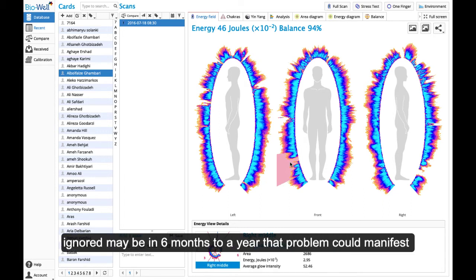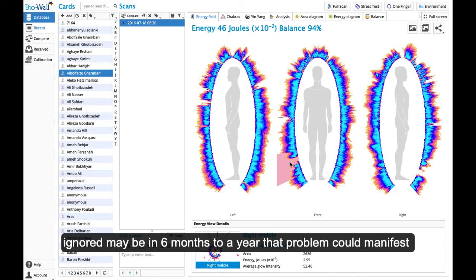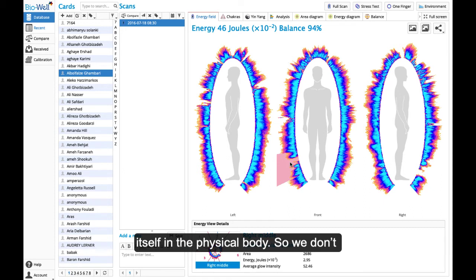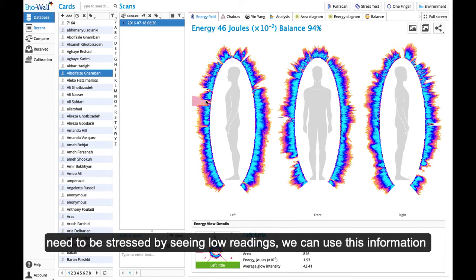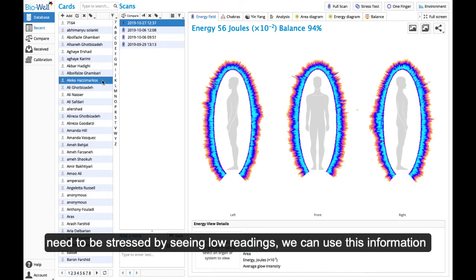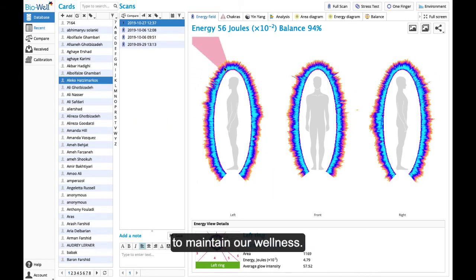In case this is ignored, maybe in six months to a year, that problem could manifest itself in the physical body. So we don't need to be stressed by seeing low readings. We can use this information to maintain our wellness.